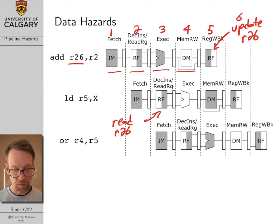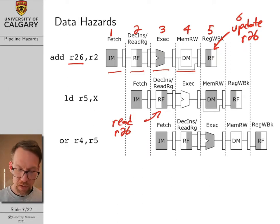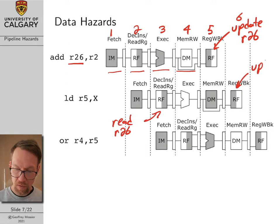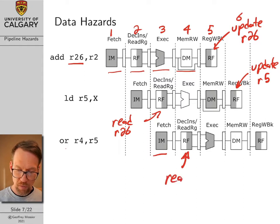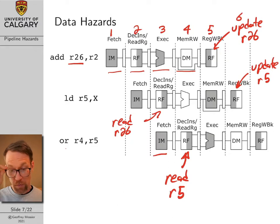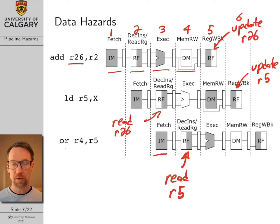The last command is an OR command that ORs register 4 with register 5. The load command moves through its steps and it's not until clock cycle 6 that we update register 5. But the OR command needs to read a value from register 5 here in clock cycle 4. So there are lots of problems — the second and third commands both need values from previous commands that aren't ready yet.